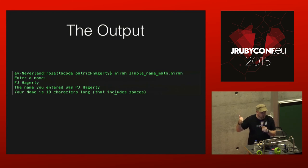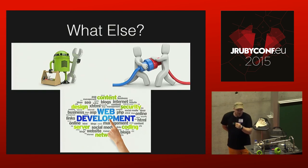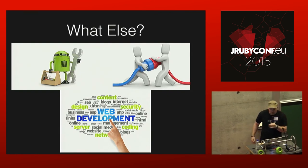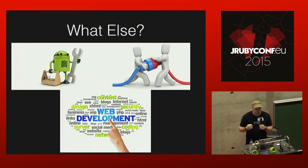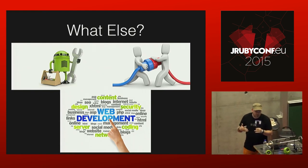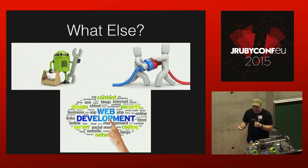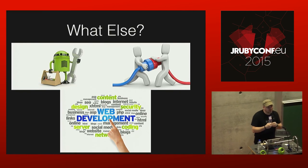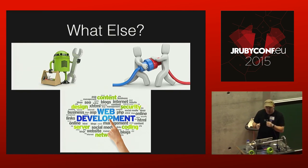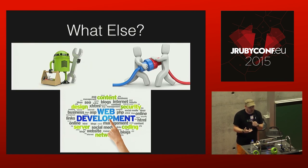But what else do people do with Mirah? One of the big things that's actually come out of it is a lot of people are using it for Android development. There are a lot of open projects using Mirah for Android, which is really cool. Up until a couple of years ago, if you wanted to do Android development as a Ruby developer, you were basically screwed. Then RubyMotion came out — it was kind of cantankerous and clunky, and you had to pay for it. Now here's an open source language where you can build Android apps natively using a very familiar, lightweight language.